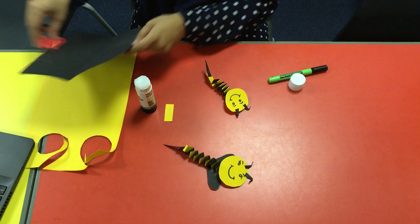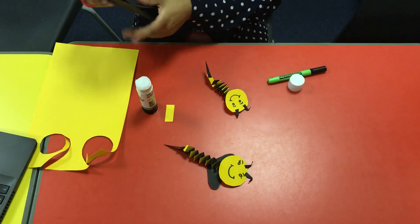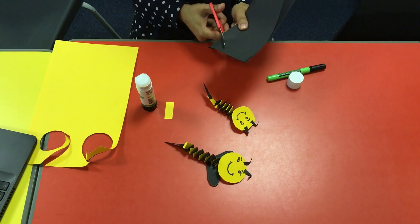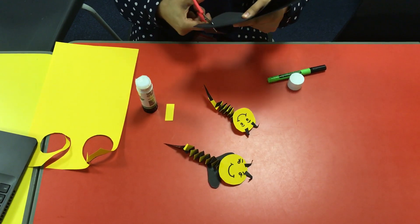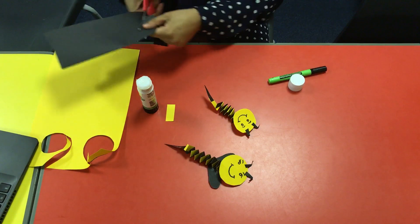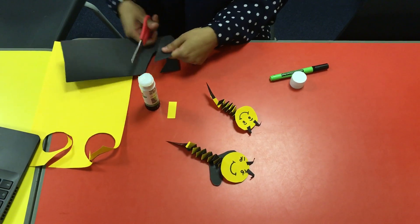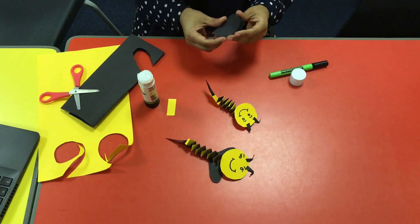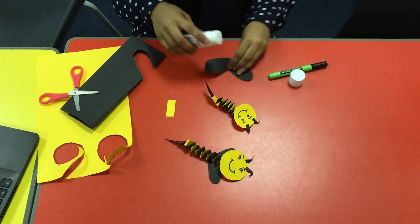And last, we need to add on some wings. So what I've done is just folded some card in half, and glue the middle.